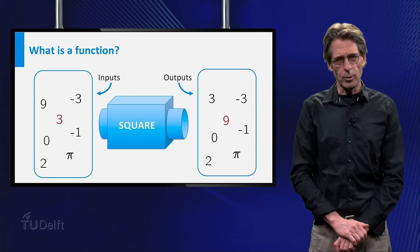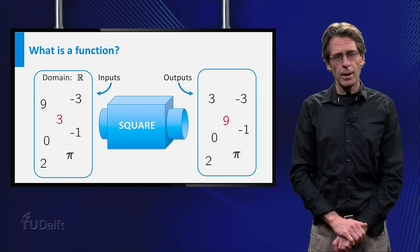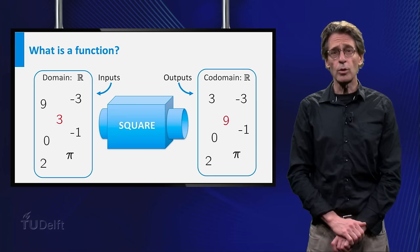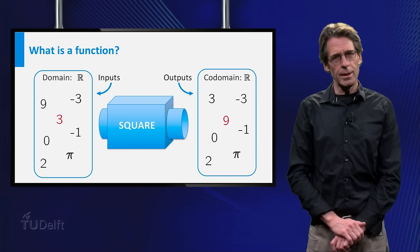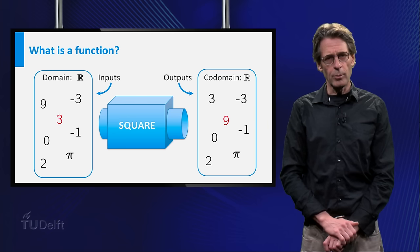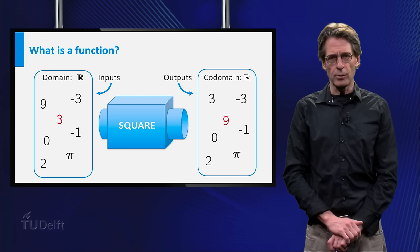Recall that the set of possible inputs is called the domain of the function, and that the outputs are elements of the codomain. In the example square, both the domain and the codomain are equal to the set of real numbers.